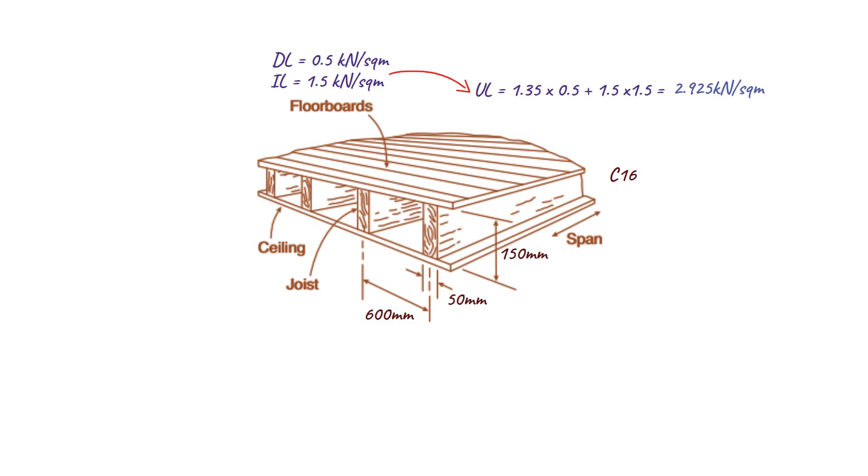Next, we need to determine the load per meter on each joist. This is done by multiplying the design load by 0.6, resulting in a load of 1.755 kN per meter on each joist. To calculate the bending moment for a simply supported floor joist with a uniformly distributed load,